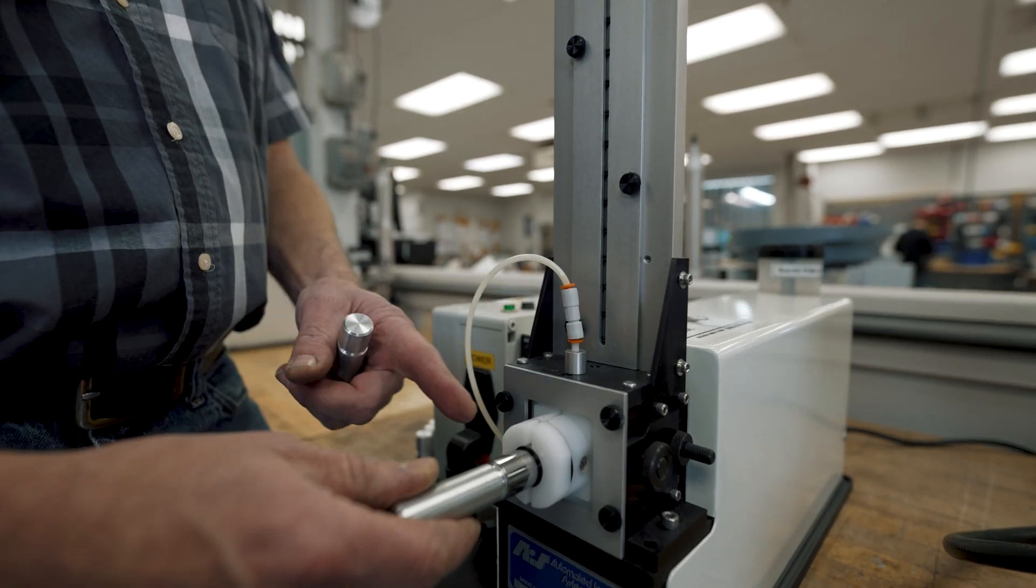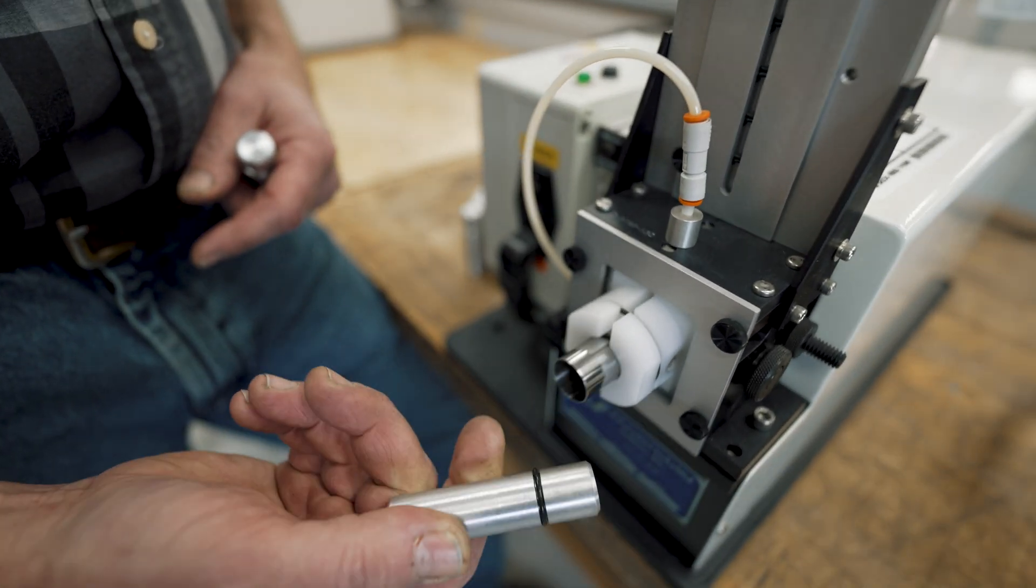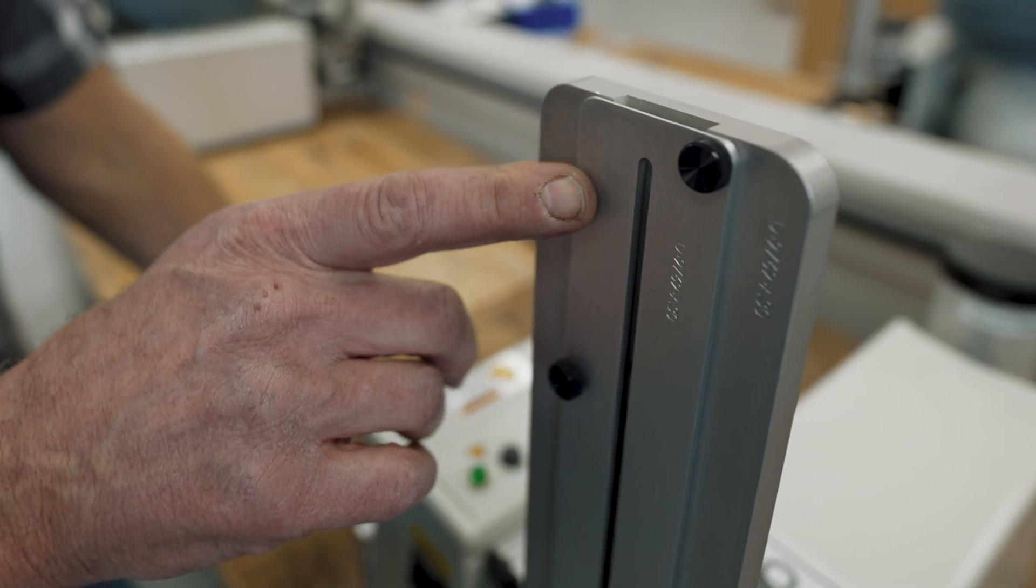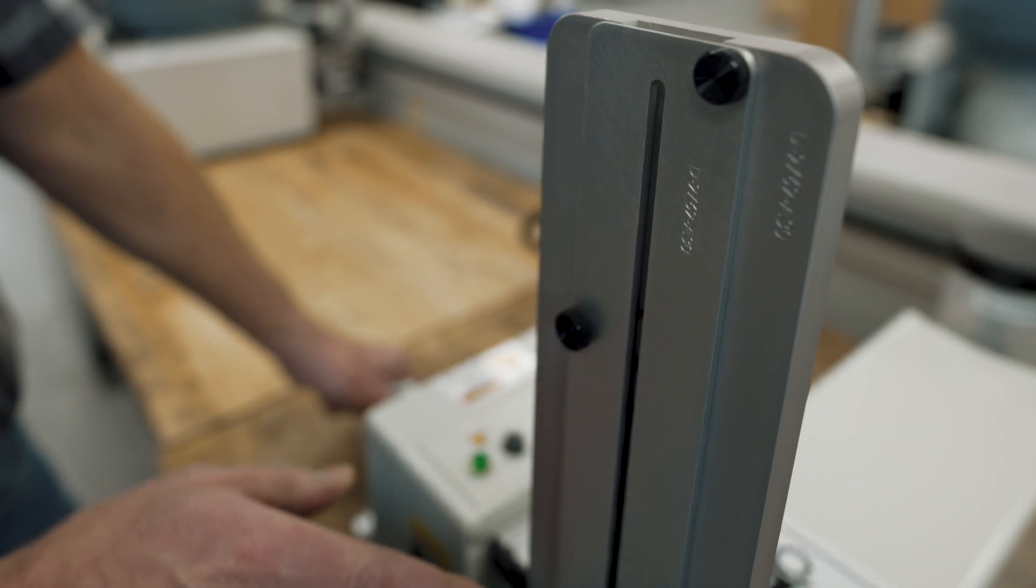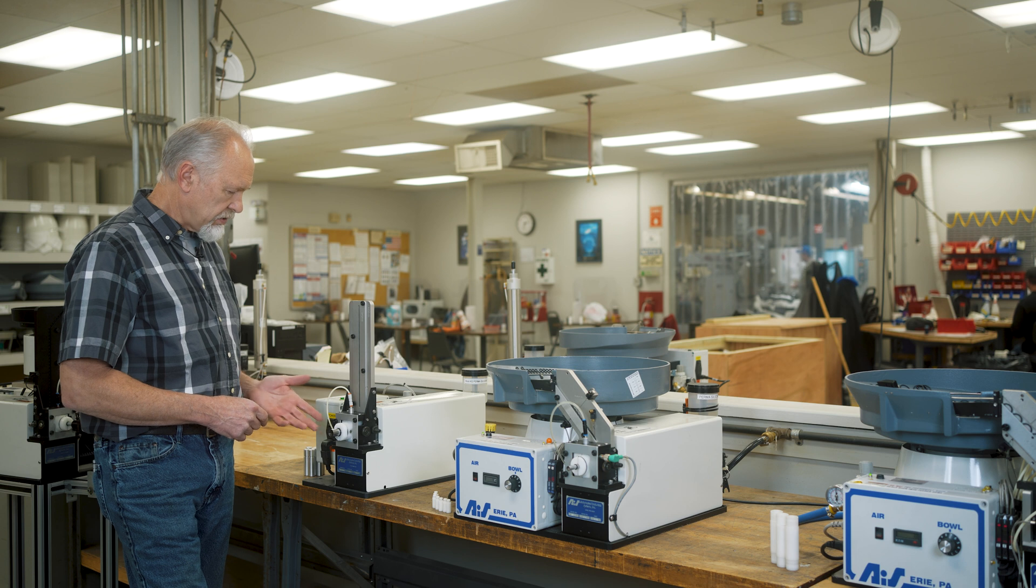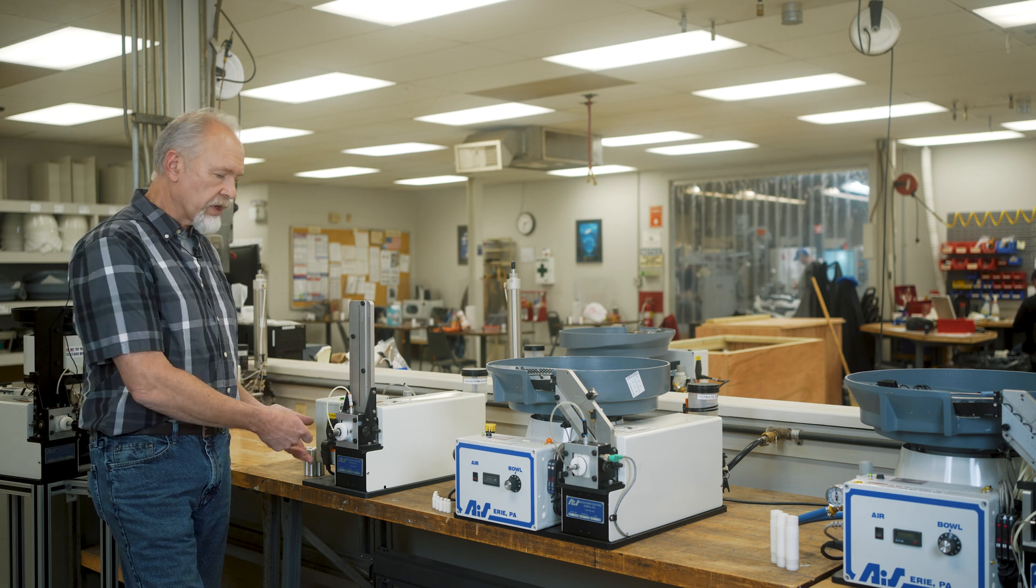You simply place your part into the mandrel and give it a push. It does have the oil dispensing on it and you can fill probably 25-30 O-rings into the magazine. And as you use it up, they'll just index down and it's there waiting for when you need to put it onto your component.